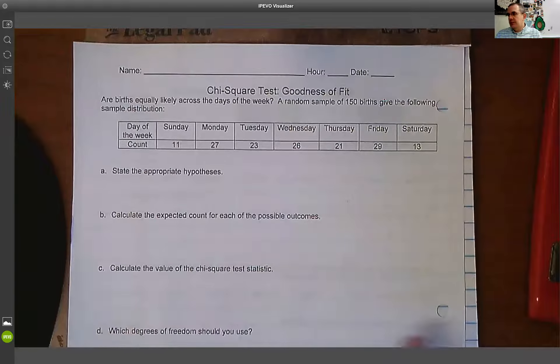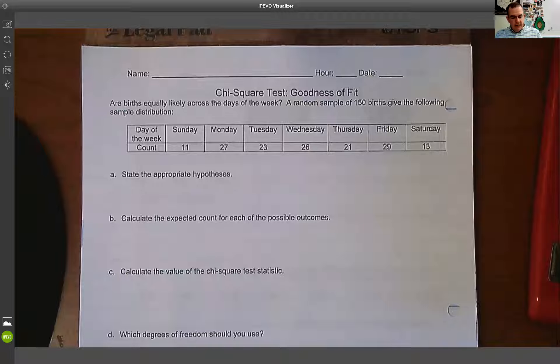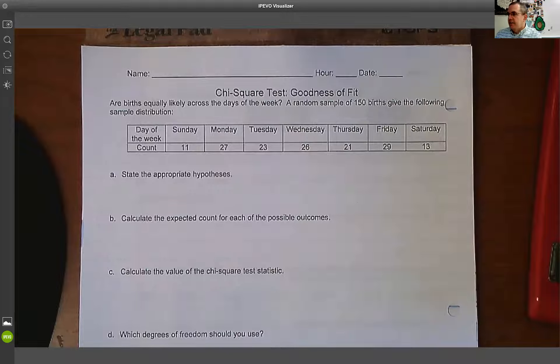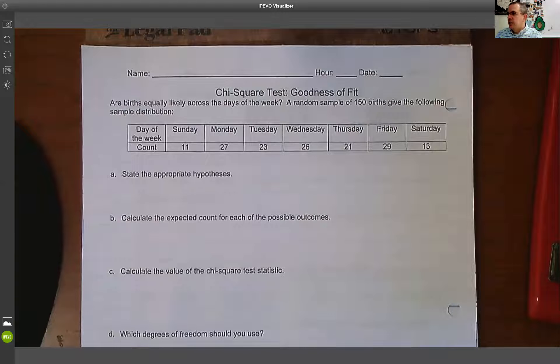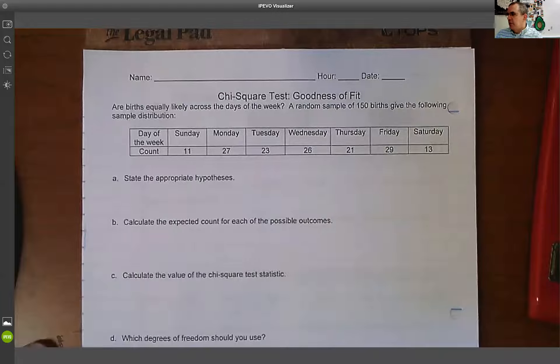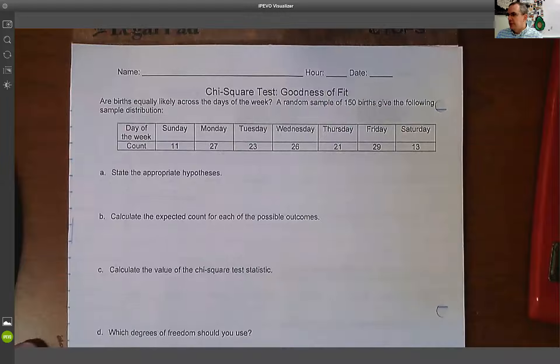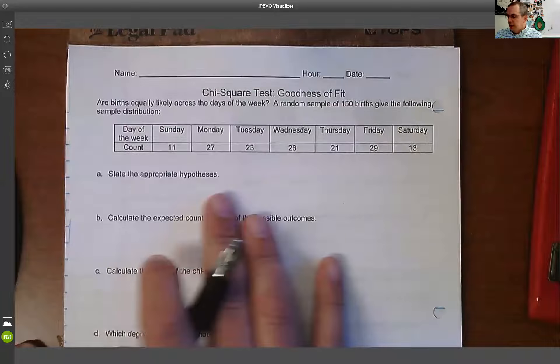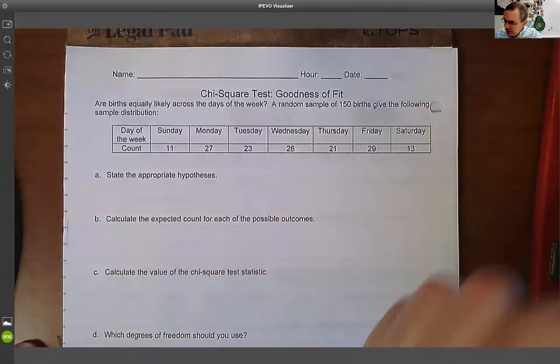So the first thing we're going to look at is this chi-squared goodness of fit test. And this goodness of fit test is based on this: Are births equally likely across the days of the week? A random sample of 150 births gives the following sample distribution. So again, if we look at this, we got a sample size of 150.